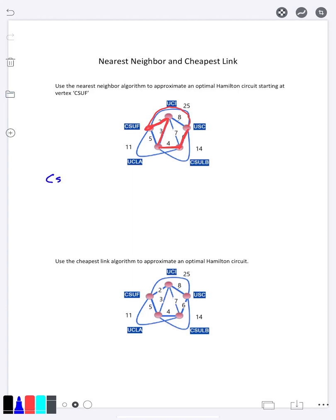So that would be our approximation for the Hamiltonian circuit that is optimal. And so it would be Cal State Fullerton to UCI for 2, then down to UCLA for 3, then over to Cal State Long Beach for 4, then to USC for 6, and then finally back to CSUF for 25. And the total weight, 2 + 3 + 4 + 6 + 25 would be 40.